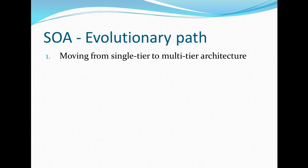Single-tier architecture is difficult to update. In a monolithic application, whenever we make any changes, we have to recompile, relink, and redeploy every time there is a change. So today there is a need to move from single-tier architecture to multi-tier architectures.